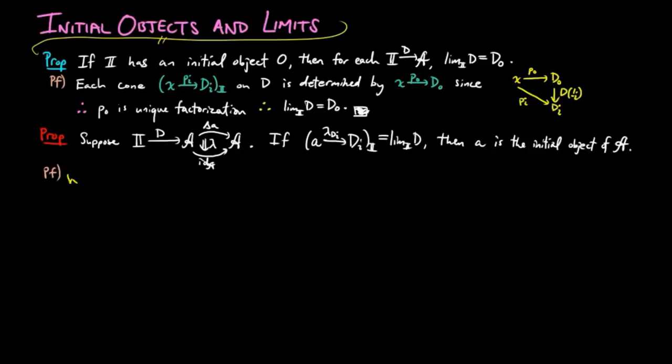For the proof, we want to show that lambda x is the unique morphism to x for each object x in the category a. So given another morphism f, we see that f lambda a is equal to lambda x, since lambda is a cone on the identity.